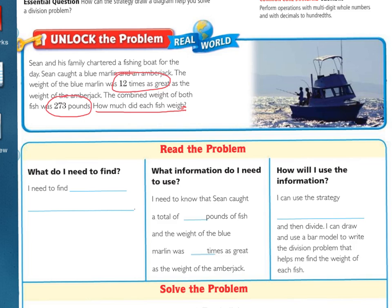12 times is great, and the total combined was 273 pounds. Now we're going to fill in this on our read the problem area right here. So the first one, what do you need to find? I need to find, fill in the blank. We need to find how much each fish weighed. Now let's answer the question, what information do I need to use? Well, I need to know that Sean caught a total of how many pounds of fish? 273. And the weight of the blue marlin was how many times as great as the weight of the amberjack. Let's look right here. It says 12 times as great as the weight of the amberjack. So, 12.